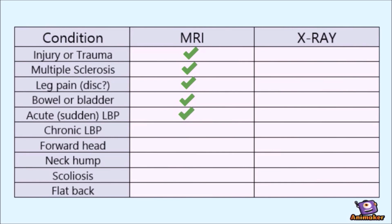Now, what about chronic low back pain? Chronic low back pain usually indicates some degenerative changes in the body and often the discs. The pain usually rates maybe a 3, 4, 5 out of 10 — not usually acute. So we'd like to see the structure and alignment in the spine, looking at the bony vertebra — bones — x-ray.